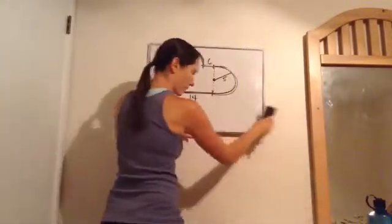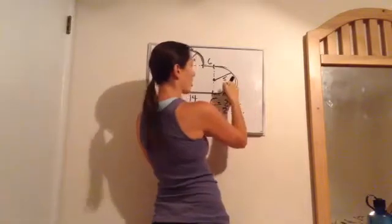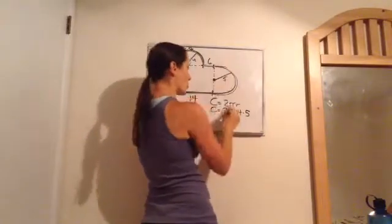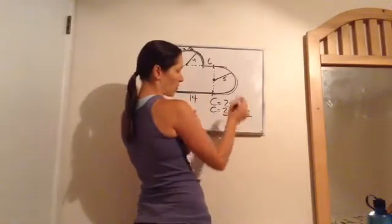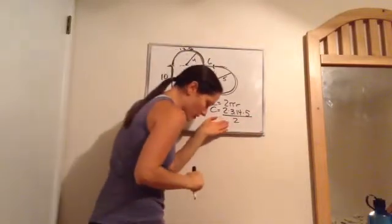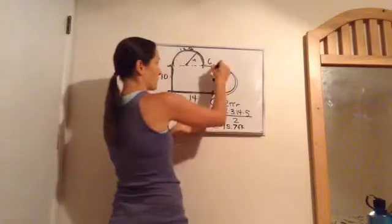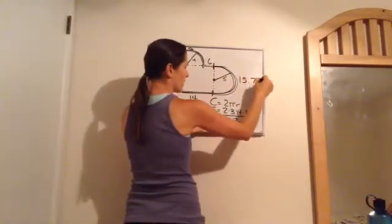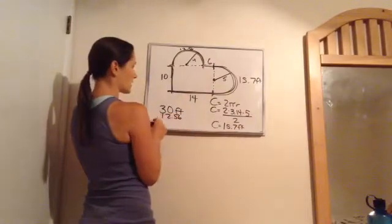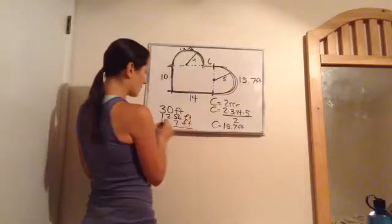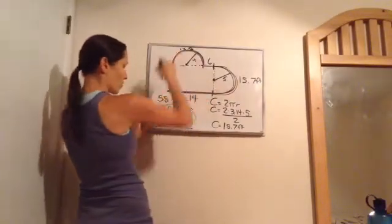For the second half circle, the radius is 5. C = 2πr divided by 2: 2 times 3.14 times 5 divided by 2. That gives 5 times 2 is 10, times 3.14 equals 31.4, divided by 2 is 15.7 feet. Now I add everything: 30 plus 12.56 plus 15.7 equals a total of 58.26 feet.